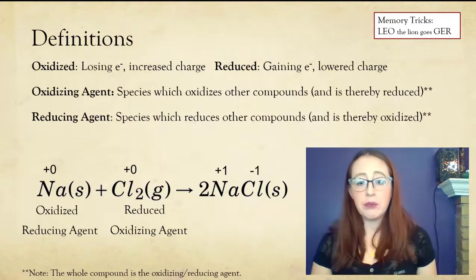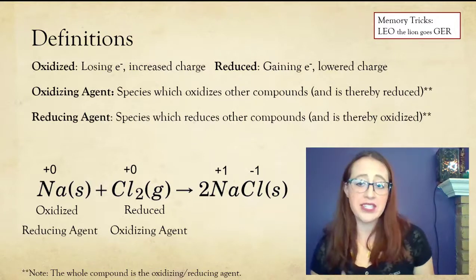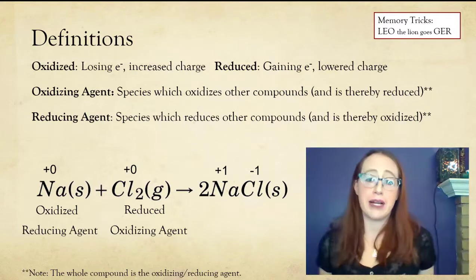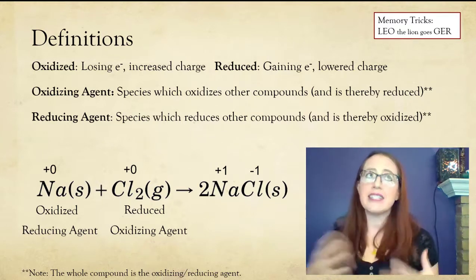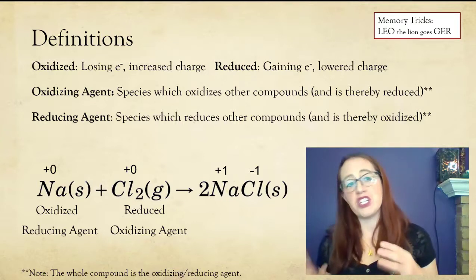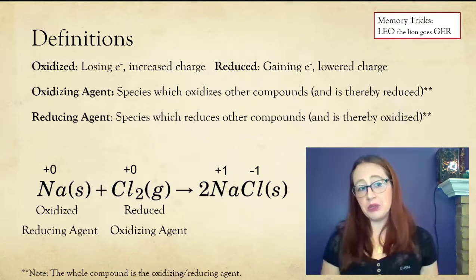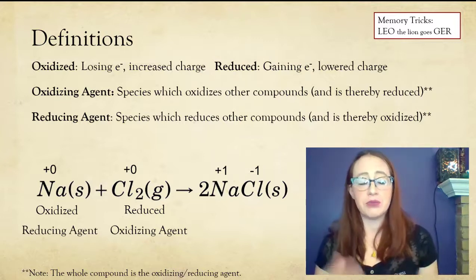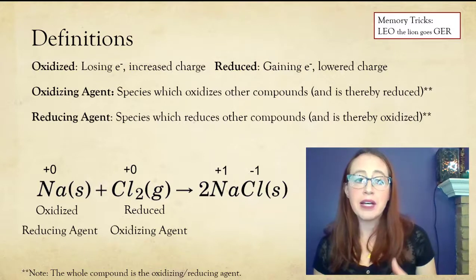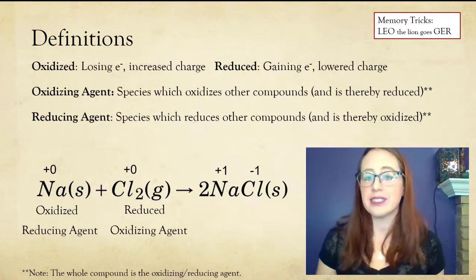Generally, when we discuss oxidizing or reducing agents, we refer to the entire compound, even if only one element in that compound is actually doing the electron exchange. The idea is a little bit more like, what would you go to the shelf and get in order to do the process that you're interested in? This isn't 100%, and there's reasons why you might want to speak about an element being an oxidizing or reducing agent, but that just tends to be how it generally works.